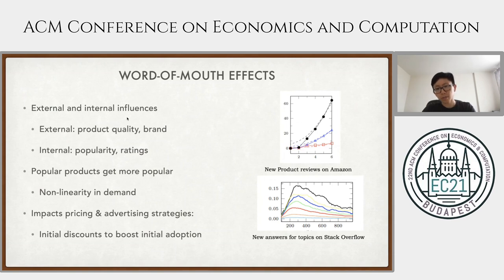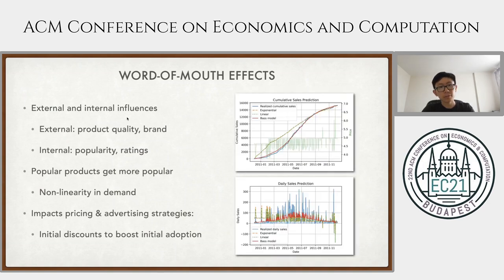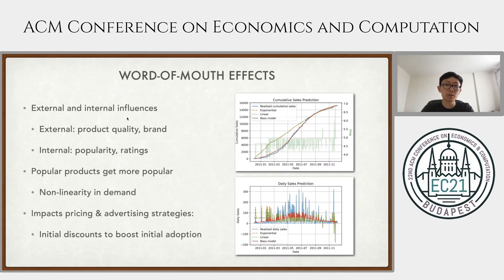We looked at empirical investigations on new product reviews on Amazon, as well as new answers for different questions on Stack Overflow. We observed that questions that initially got a lot of answers will get even more answers over time. We also examined a dataset from an online retailer and found that the cumulative adoption curve exhibits an S-shaped pattern. The Bass model, shown in red, is able to capture this S-shape very nicely, whereas traditional stationary demand models were not.